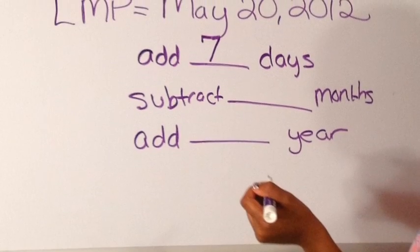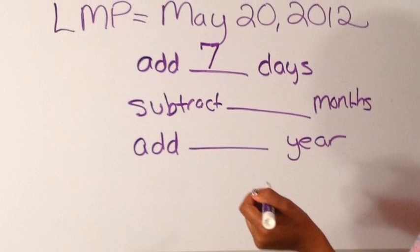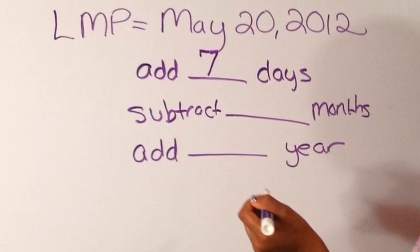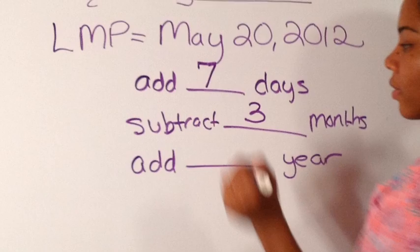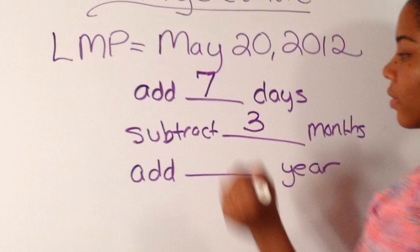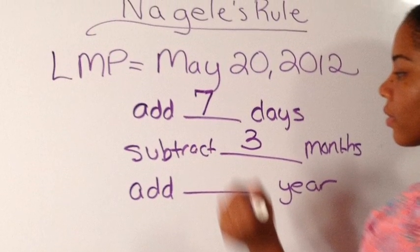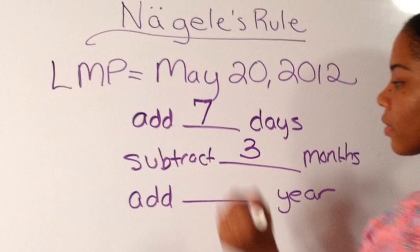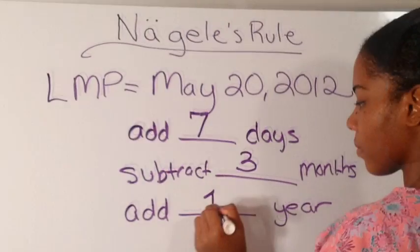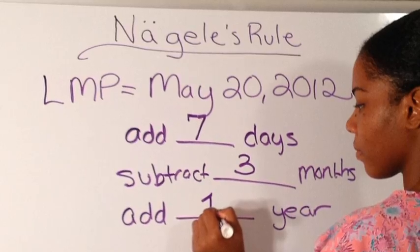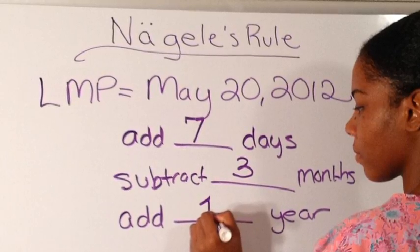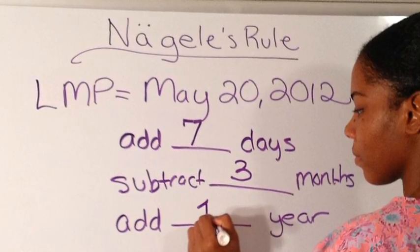You can do this. You just add seven days. Next, after you add seven days, you're going to subtract three months. Now it's time for you to add one year to the equation.